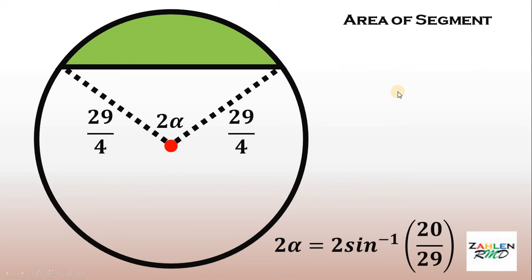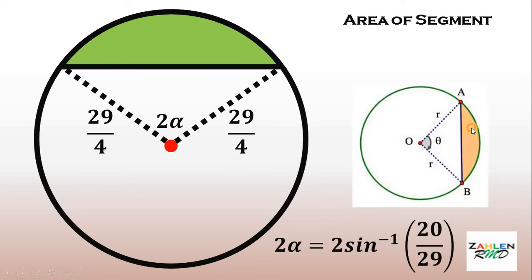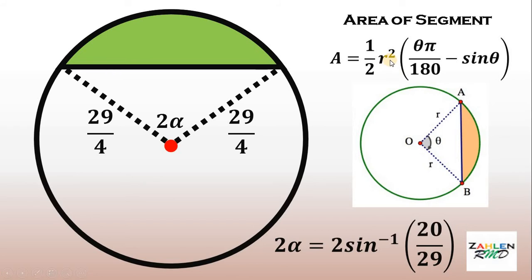Let's recall the formula for finding the area of a circular segment. The area of a segment equals one half times r squared multiplied by (theta times pi over 180 minus sin of theta). This is simply the area of the sector — one half times r squared times theta times pi over 180 — minus the area of the triangle, which is one half times r squared times sin of theta.